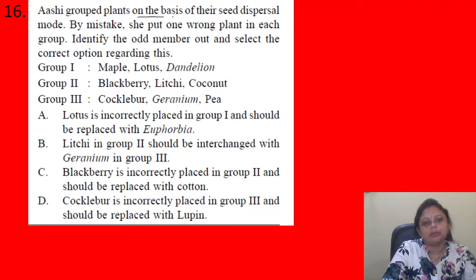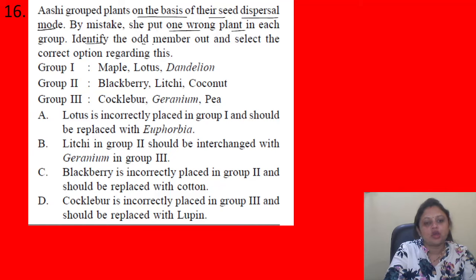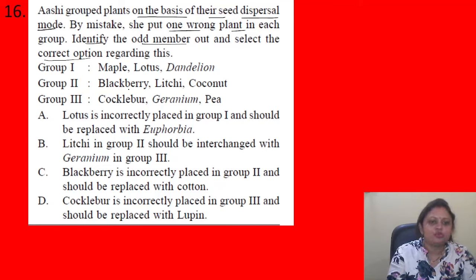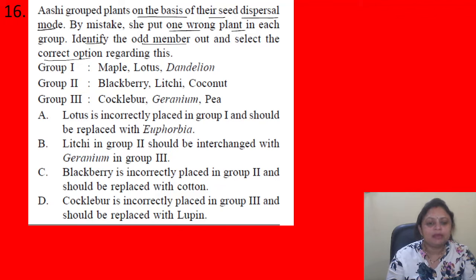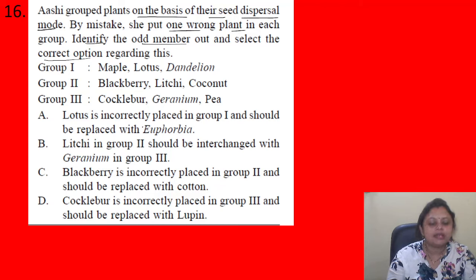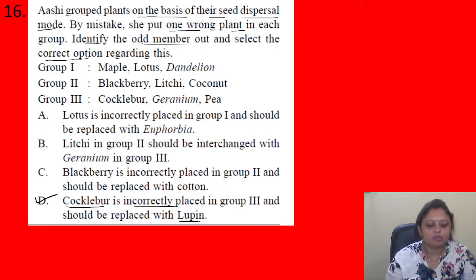Next question: She grouped plants based on seed dispersal but put one wrong plant in each group. Group 1: maple, lotus, dandelion; Group 2: blackberry and others; Group 3 includes cochlebur. Options: A) blackberry is incorrectly placed in group 1 and replaced with euphorbia; B) lychee in group 2 interchanged with geranium; C) blackberry incorrectly placed in group 2 replaced with cotton; D) cochlebur is incorrectly placed in group 3 and should be replaced with lupin. Correct answer is option D, because seed dispersal in group 3 occurs through explosion of pods.